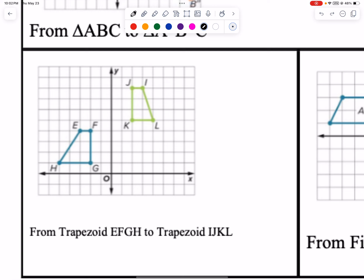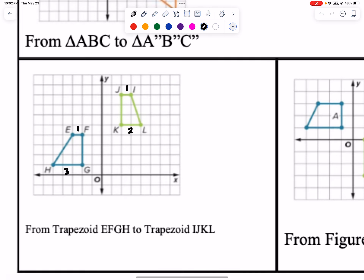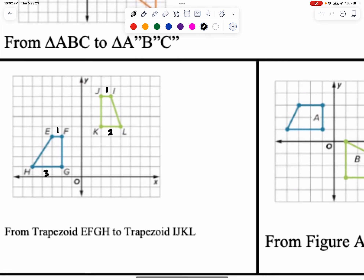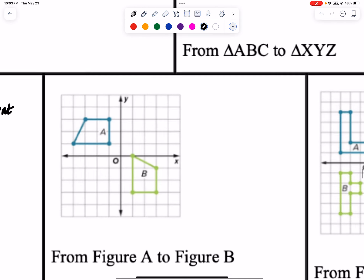Looking at this next figure: this small base is one, this base is two, this one's three. So right away we can tell that these are not congruent. So we're done with that.